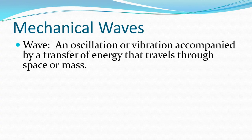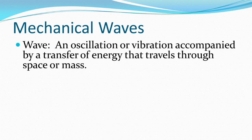A wave is an oscillation or vibration accompanied by a transfer of energy that travels through space or mass. Oscillation means to go back and forth or up and down. Think about your image of a wave — probably a wave at a beach. The waves tend to go up and down; the water bobs up and down. It's oscillating, passing energy through the water.